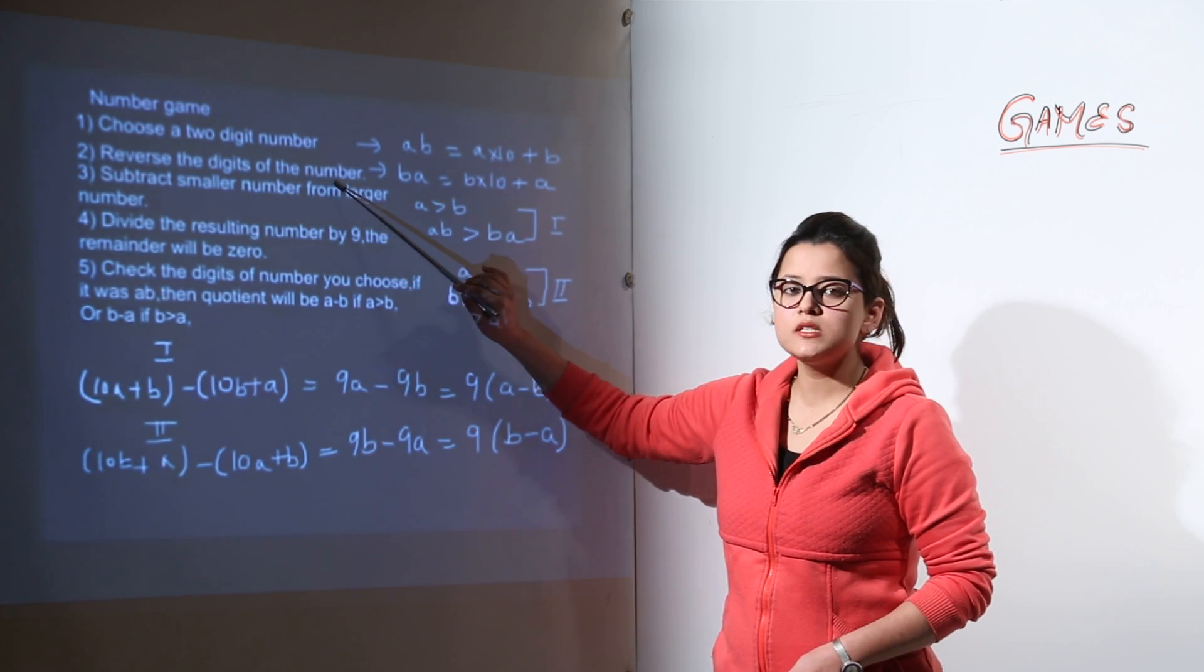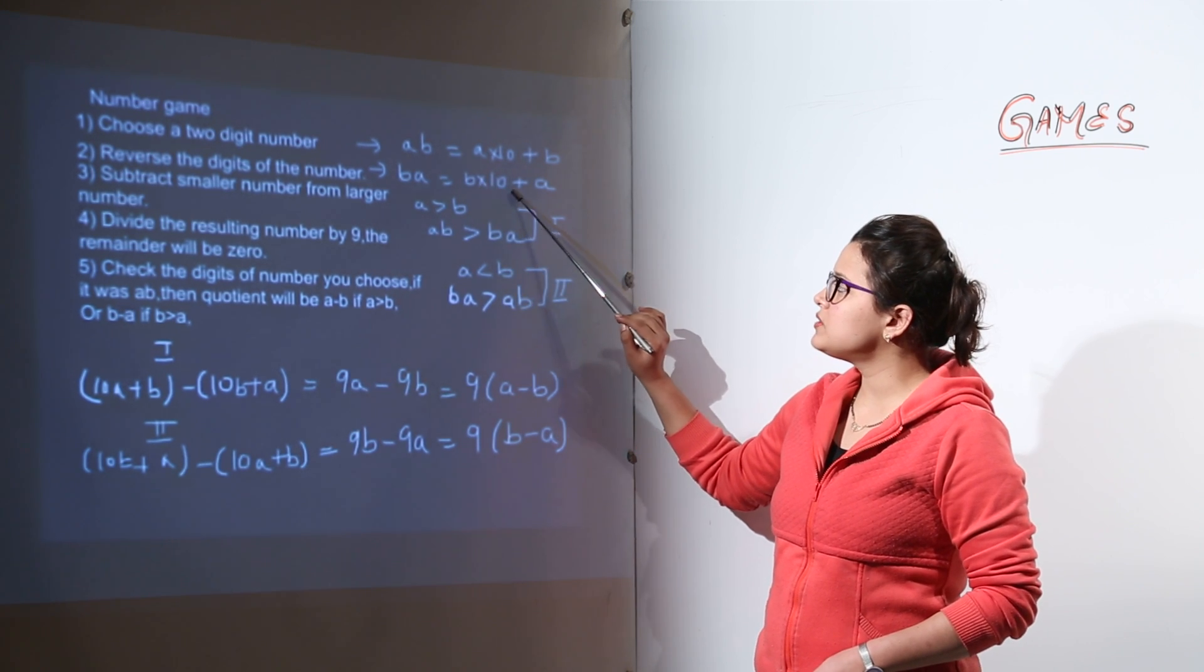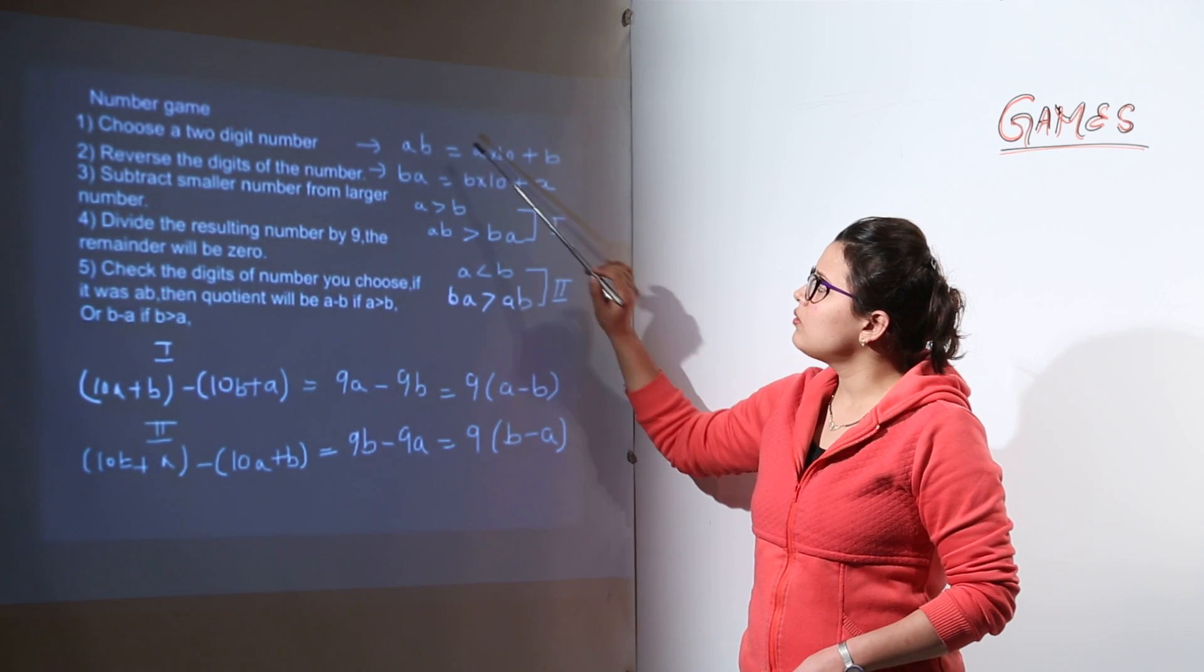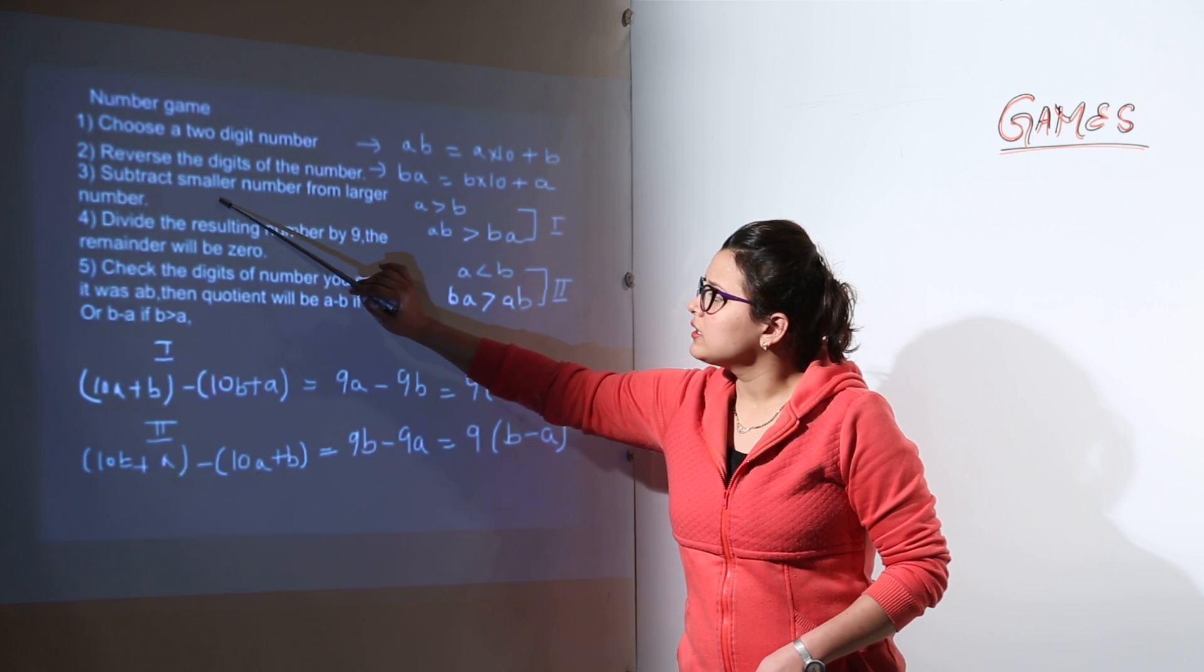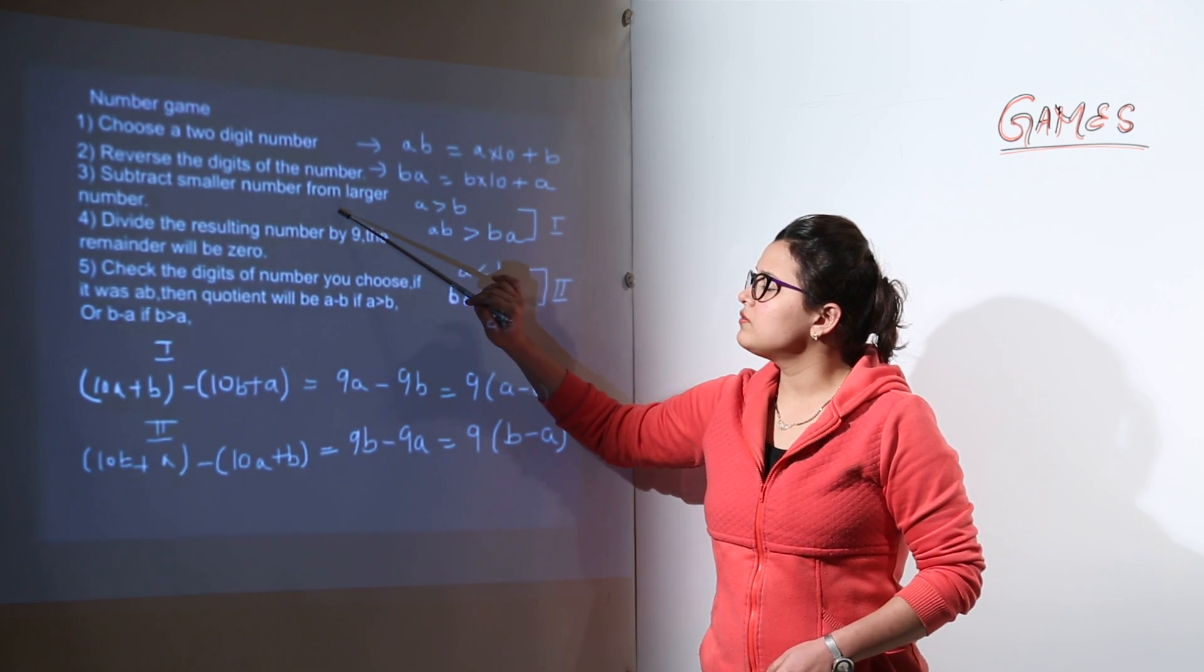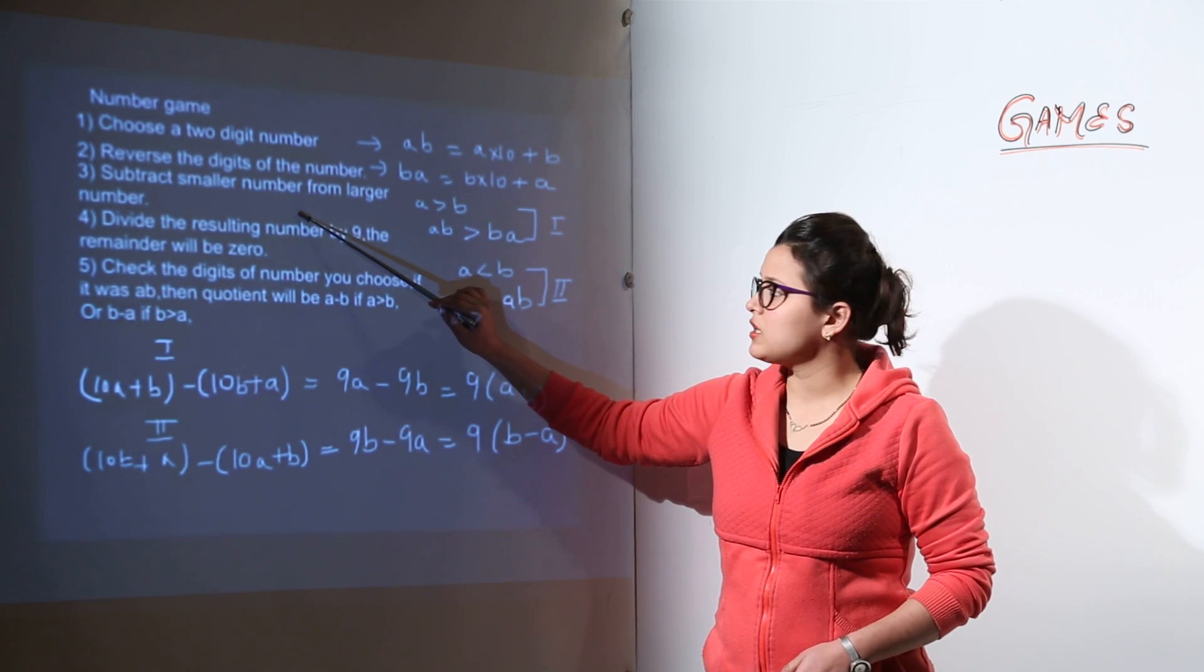Reversing the digits you would get BA. BA can be represented as B into 10 plus A. Now out of these both finally you have to check that which one is the smaller and which one is the larger because you have to subtract the smaller number from the larger number.